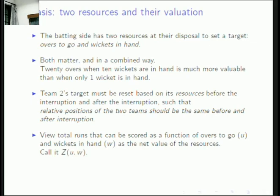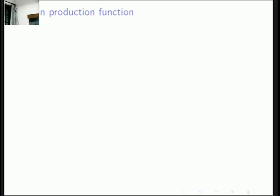Z(u, w) is the number of runs that you can score when you have u overs remaining and w wickets available. These slides are available on the web for those who want to look at them afterwards. We need to identify what Z(u, w) is — this is called the run production function.